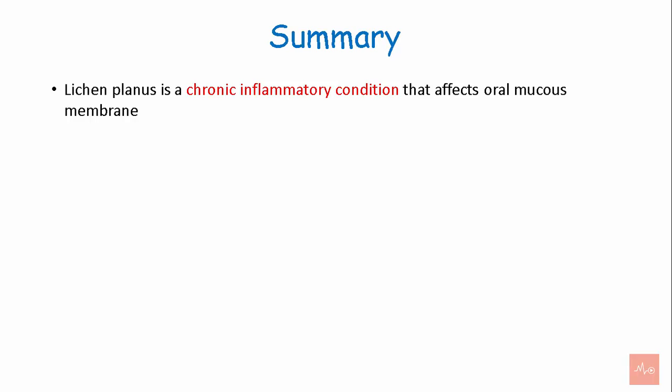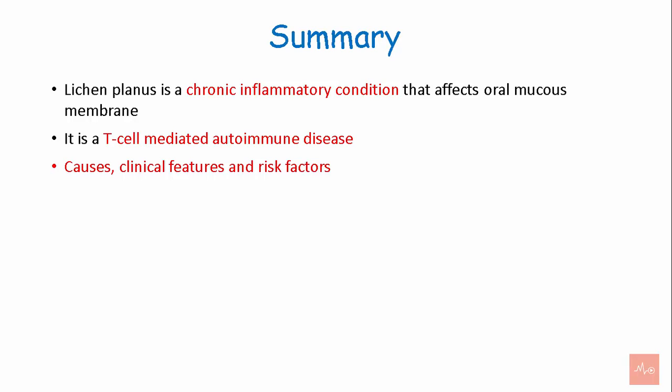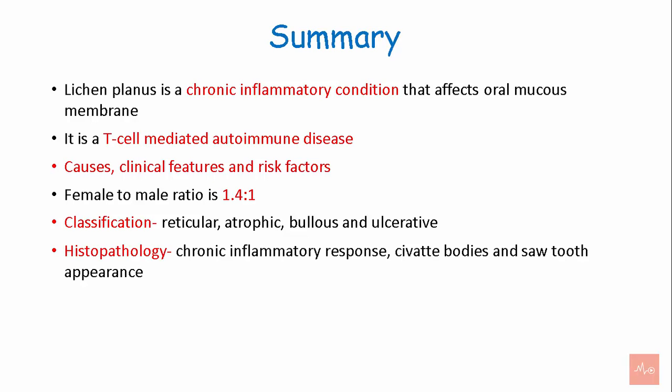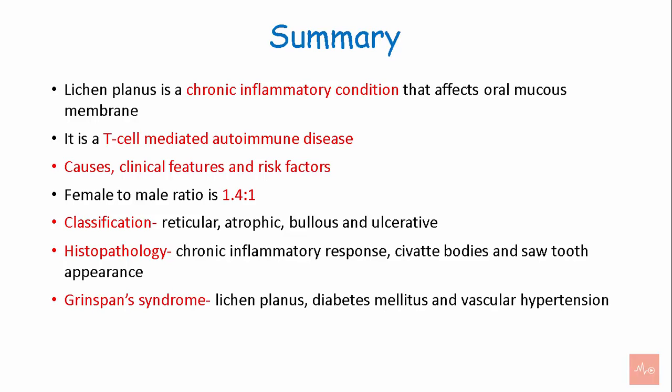To summarize: Lichen planus is a chronic inflammatory condition that affects the oral mucous membrane. It is a T-cell mediated autoimmune disease. The causes, clinical features, and risk factors were covered. Classification is of four types: reticular, atrophic, bullous, and ulcerative. The histopathology consists of chronic inflammatory response, Civatte bodies, and sawtooth appearance. Grinspan syndrome is a group of diseases consisting of lichen planus, diabetes mellitus, and vascular hypertension.